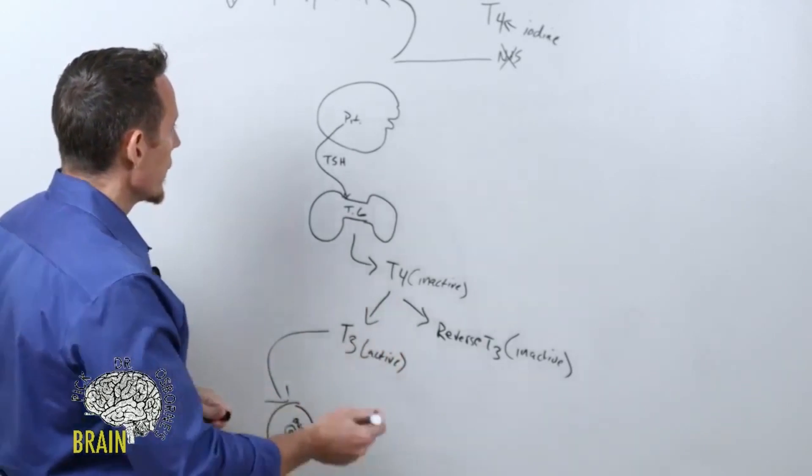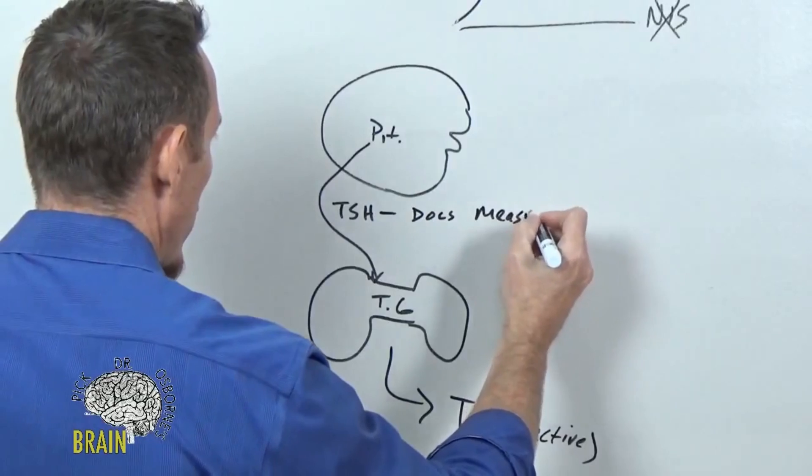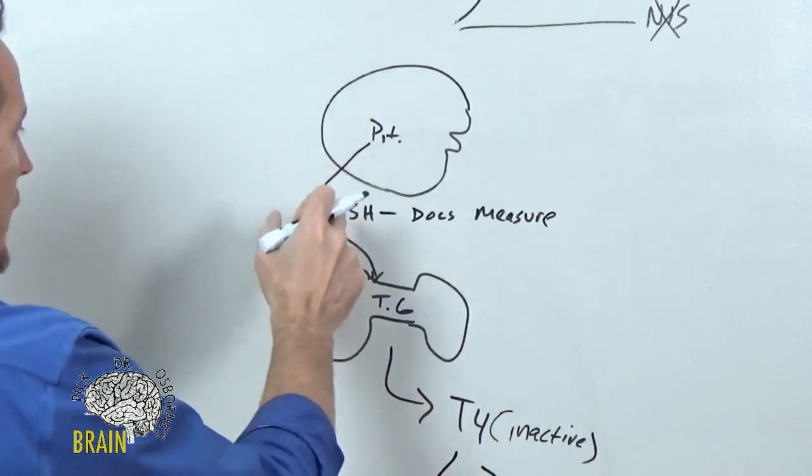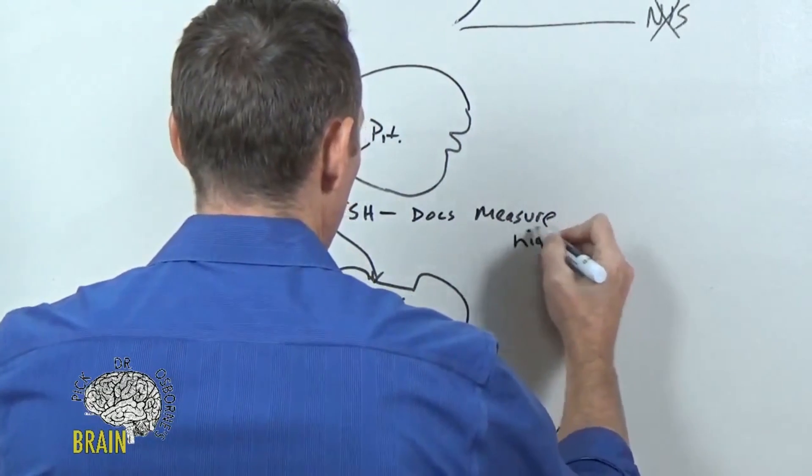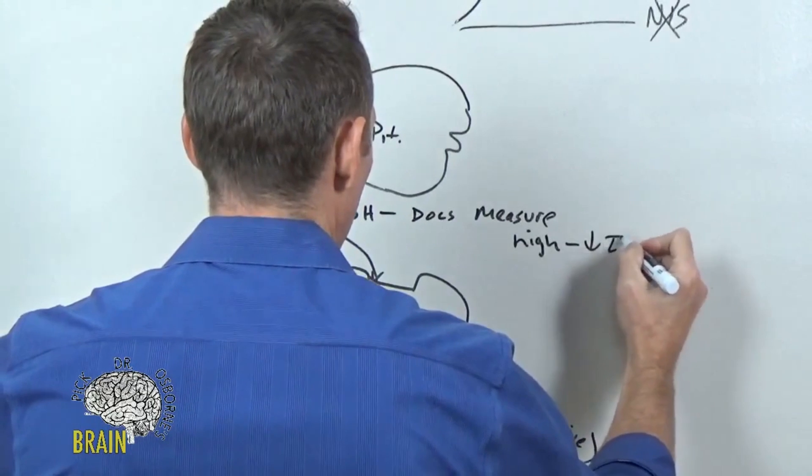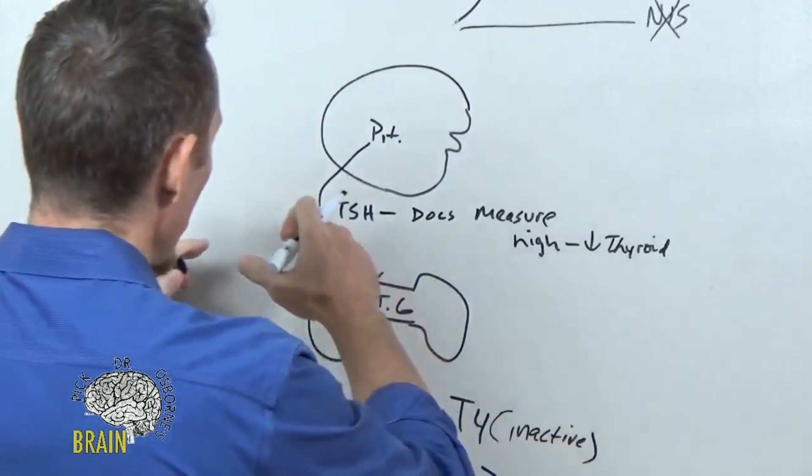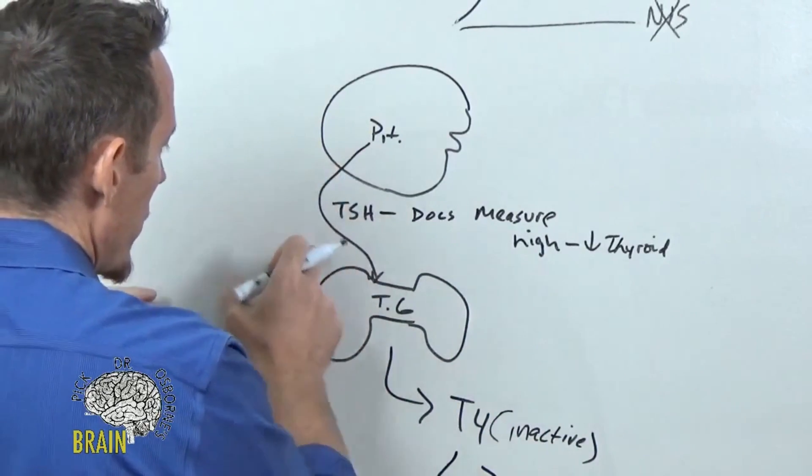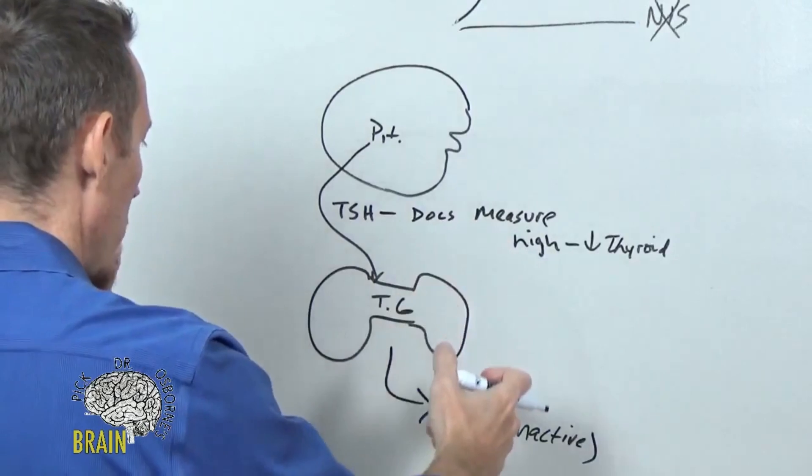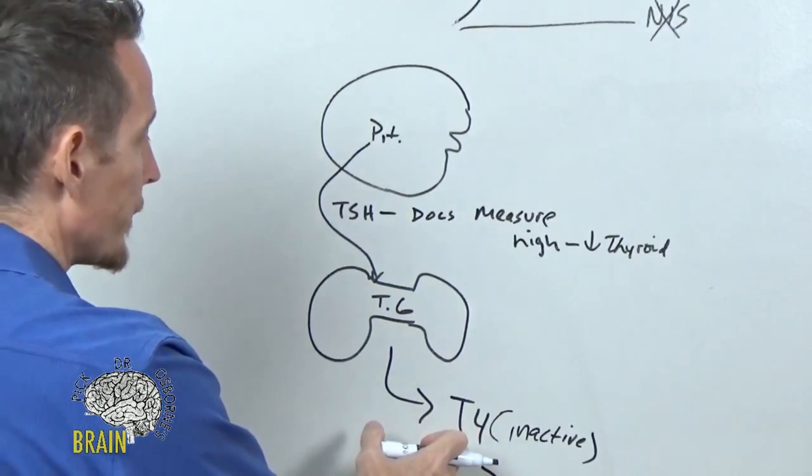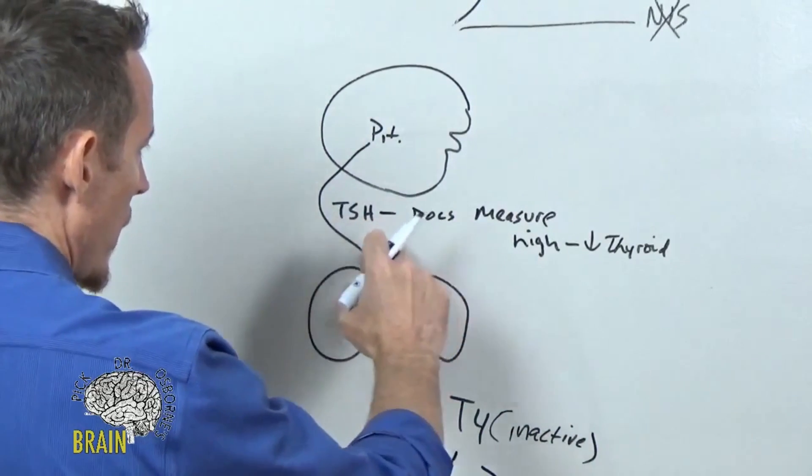Most doctors will measure TSH. They'll measure TSH and this is a lot of times how the diagnosis is made. If your TSH is high, then they tell you you have low thyroid. If it's low, they tell you you have high thyroid. TSH - the more of it you make, the more you're trying to get your thyroid to stimulate the production of T4. That's why if it's measuring high, we say you have low thyroid hormone. So it can get confusing. Most doctors will only measure TSH and base the whole diagnosis on one element.